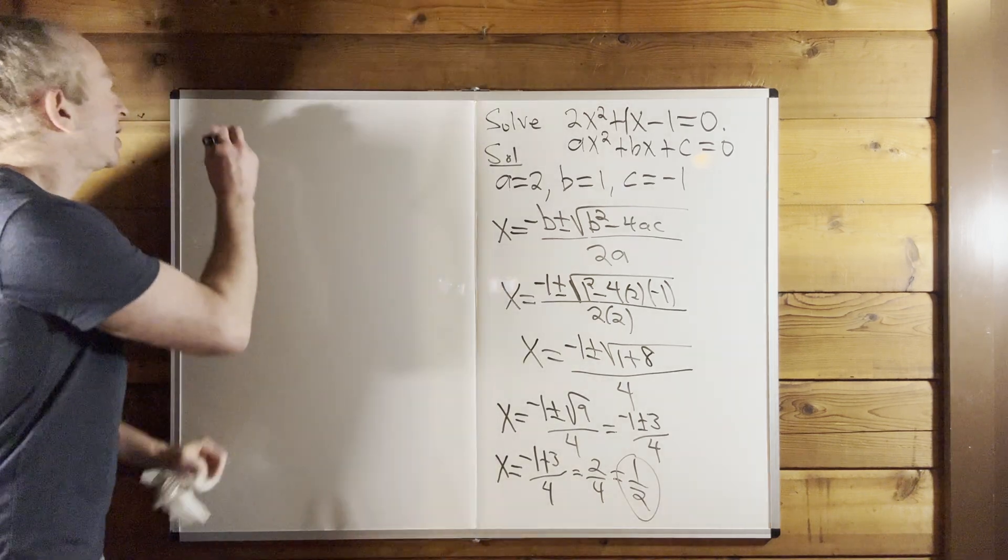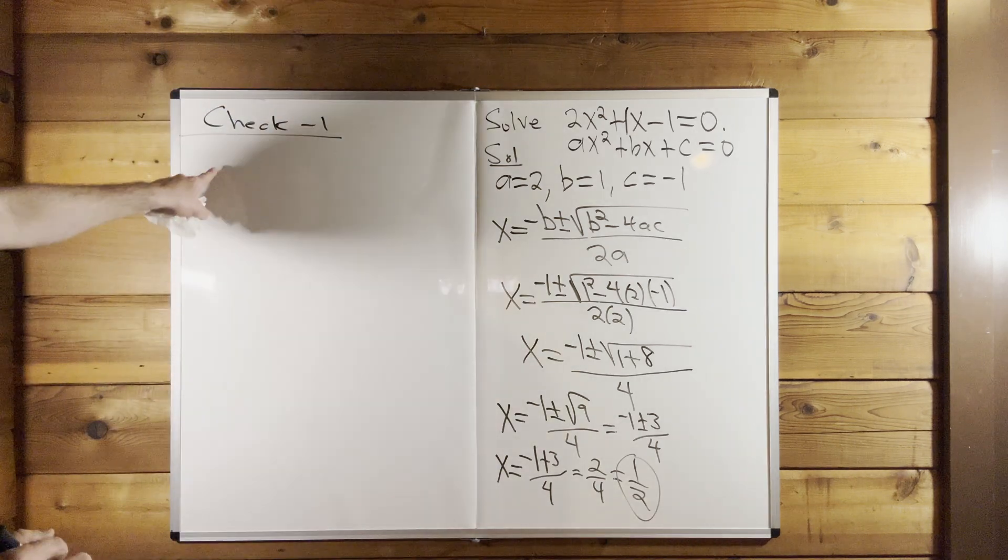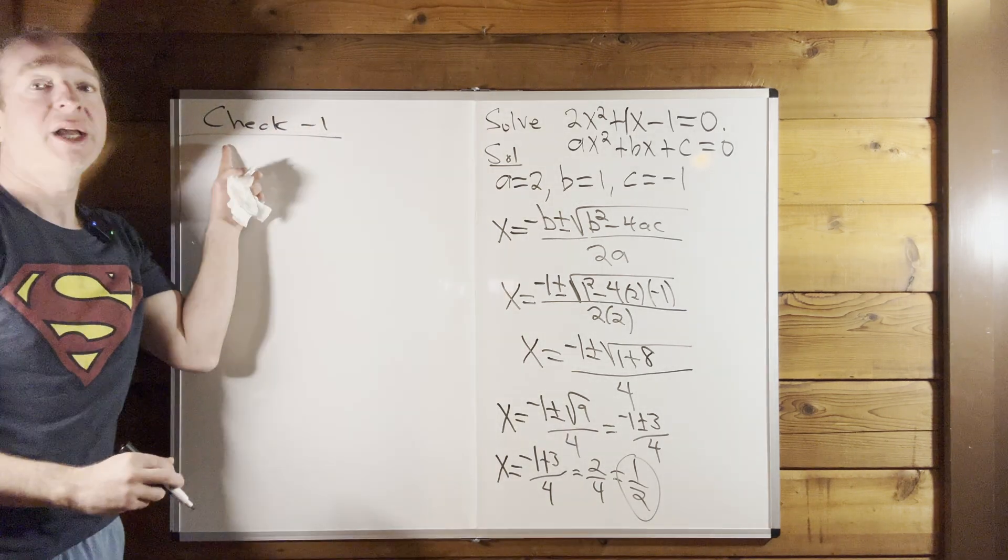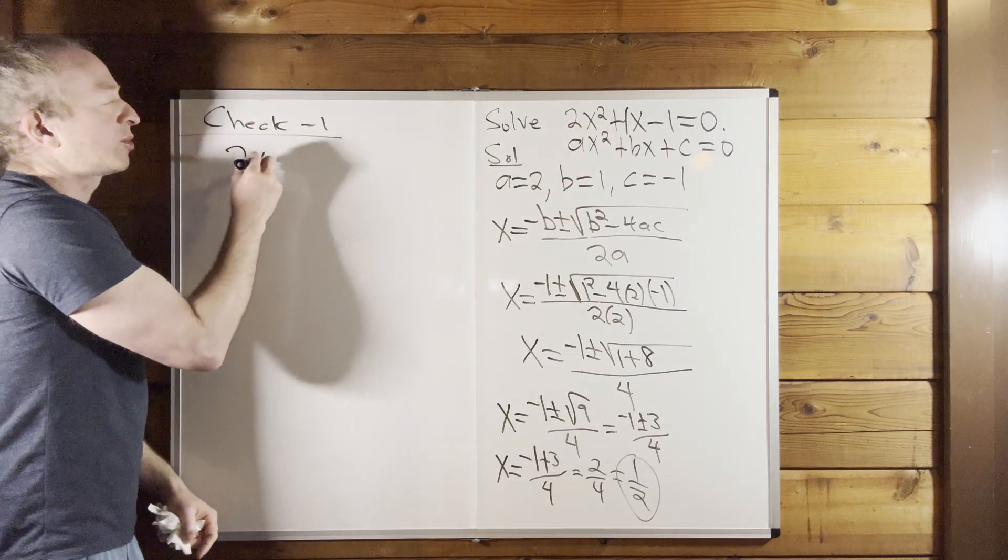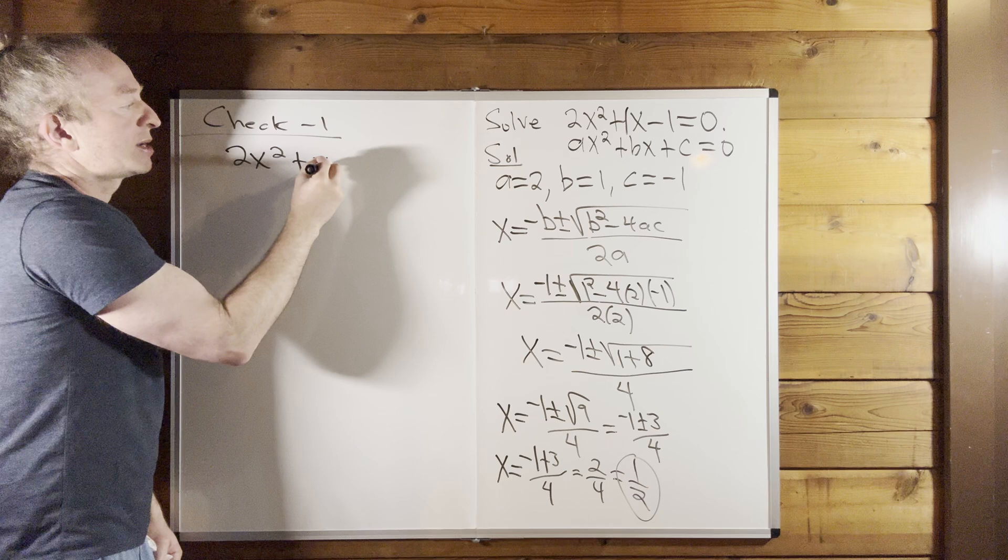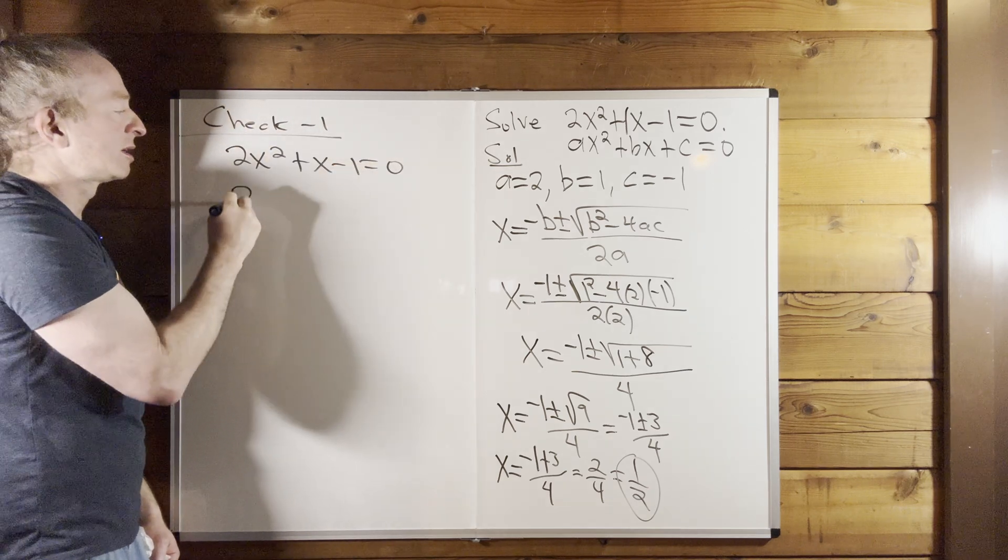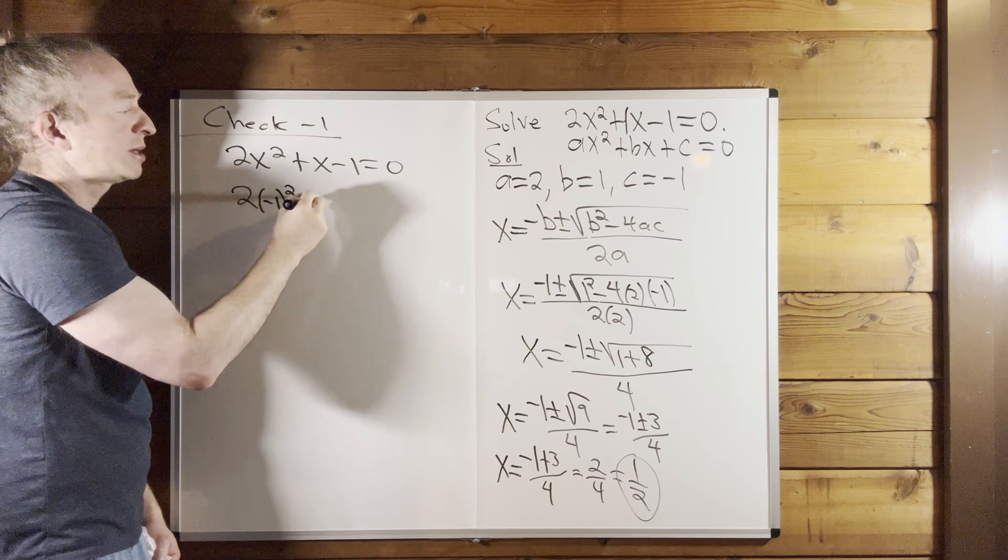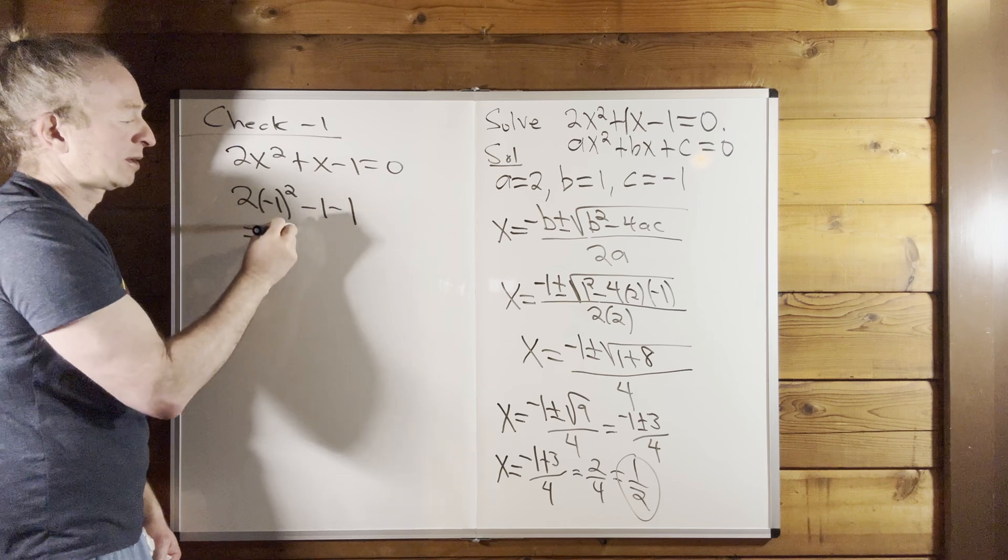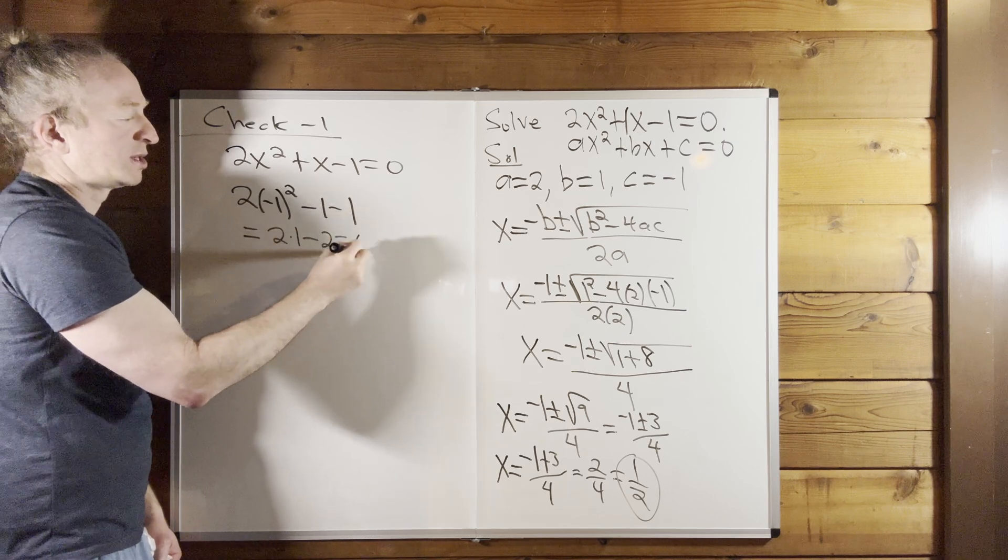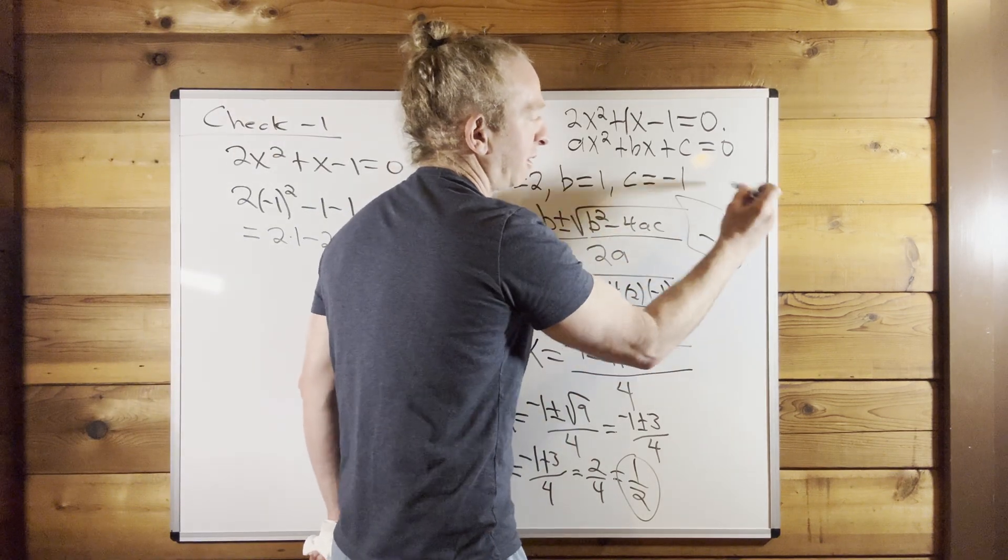So let's go ahead and check negative 1. So to check negative 1, what you want to do here is you basically want to take it and plug it into this. So our equation is 2x squared plus x minus 1 equals 0. So checking negative 1 means that you put a negative 1 everywhere there's an x. So it's 2 times negative 1 squared minus 1 minus 1. So this is equal to 2 times 1 minus 2, which is 0. So it checks. So negative 1 is indeed one of our answers.